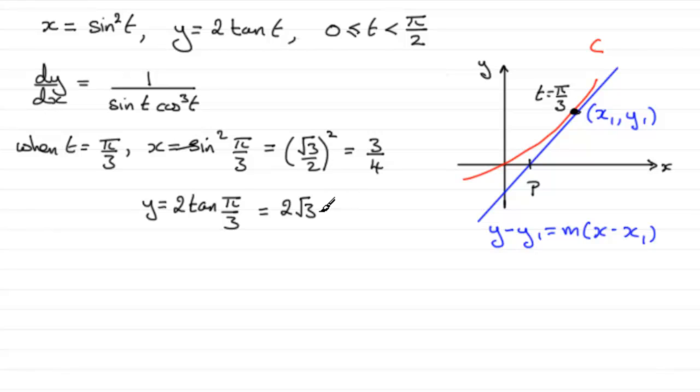We also need the gradient, our value of m at T equals π/3. So we can get that as well. So we'll say also dy/dx equals, and we're going to have 1 then divided by the sine of π/3,